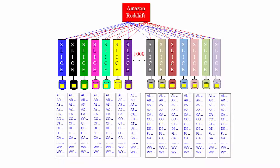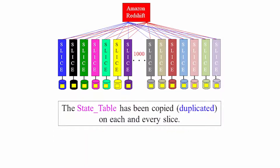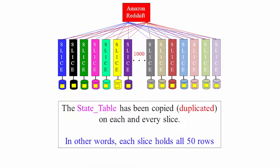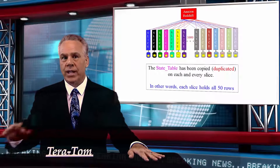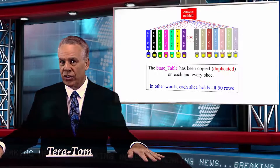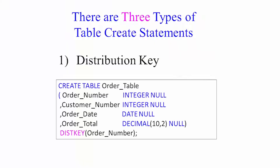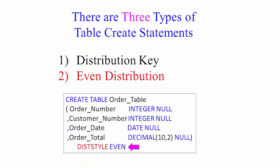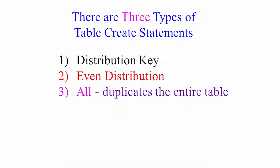So it would be like looking in a mirror — I've got 50 states here, and they'd all say, we all have the 50 states. So those are the three distribution styles: a distribution key, even, or all.